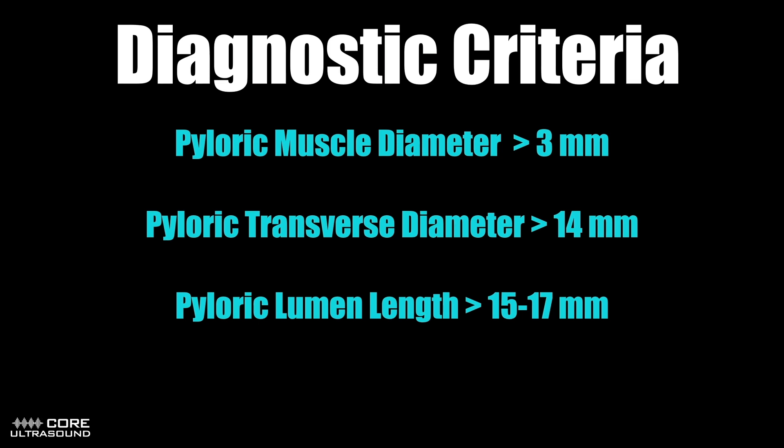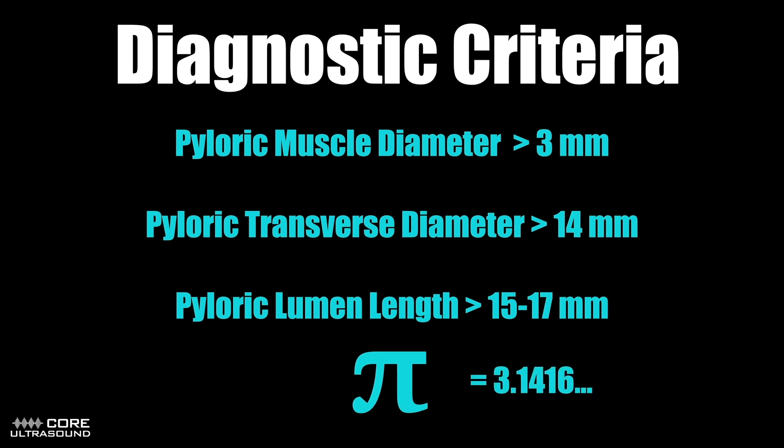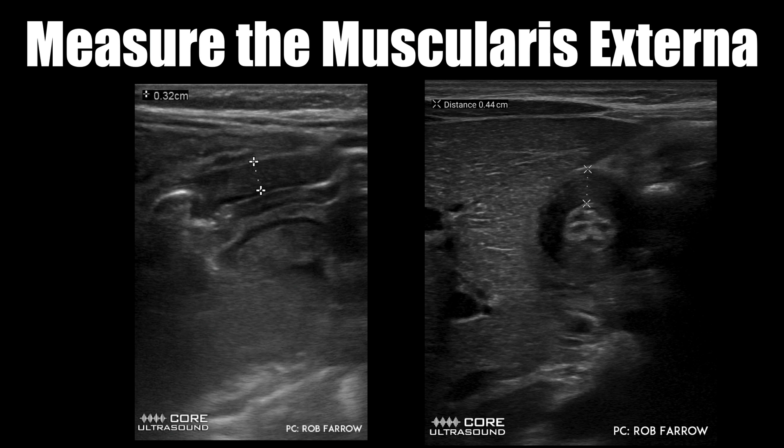There are several measurements, and it may be difficult to remember these as we don't do this scan every day. An easy way to keep these numbers in mind is to think of pi. Pi is equal to 3.1416, and we've basically rounded up here. The convenience of this mnemonic is that we can remember: pyloric muscle diameter is 3mm, the pyloric transverse diameter is 14mm, and our pyloric canal length is 16mm. By keeping pi in mind, you can remember your abnormal values when evaluating for pyloric stenosis.